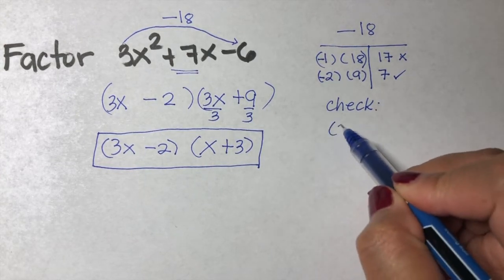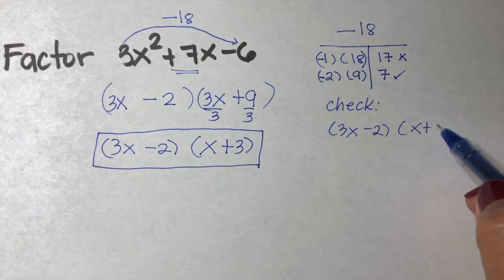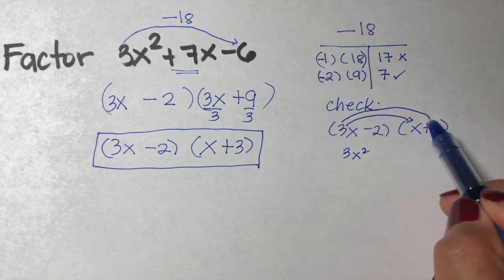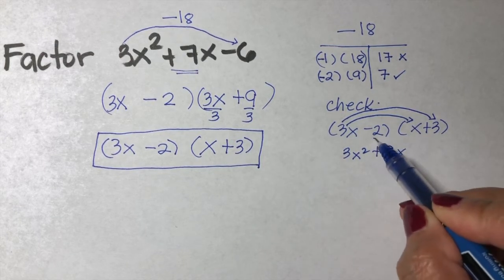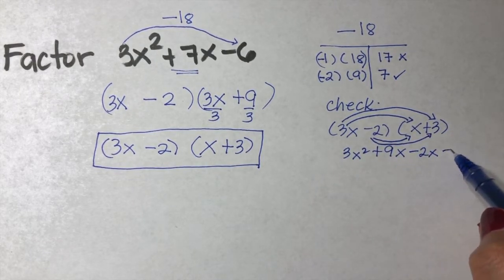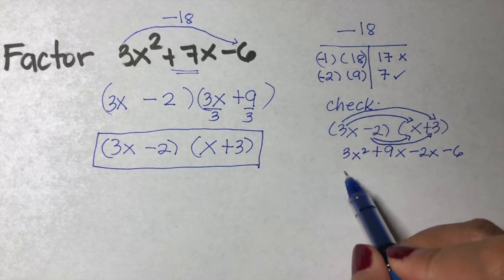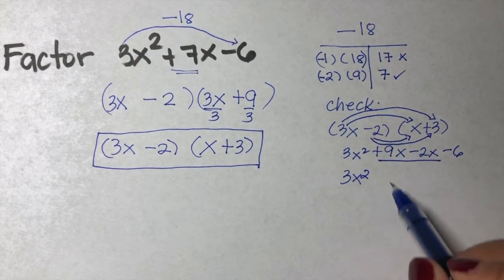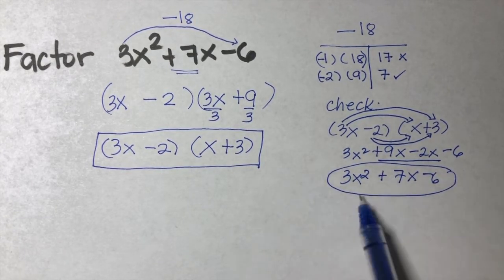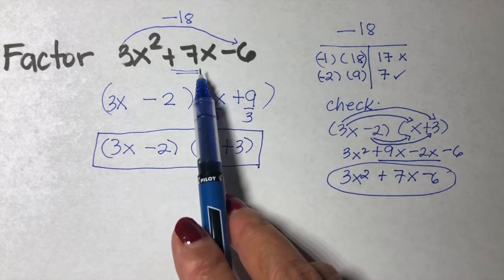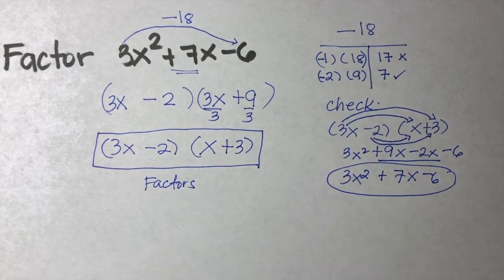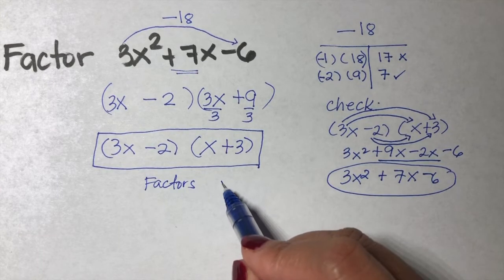Let us check by multiplying 3x minus 2 times x plus 3 using FOIL. 3x times x is 3x squared. 3x times 3 is 9x. Negative 2 times x is negative 2x. And negative 2 times positive 3 is negative 6. Combining like terms: 9x minus 2x is positive 7x minus 6. Since 3x squared plus 7x minus 6 is the same as our original problem, our answer is correct.